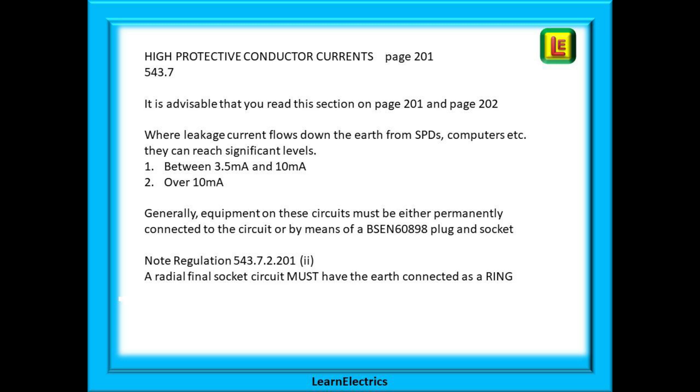Generally equipment on these circuits must be either permanently connected to the circuit or by means of a BS EN 60898 plug and socket. Note especially regulation 543.7.2.201 part 2, a radial final socket circuit must have the earth connected as a ring.